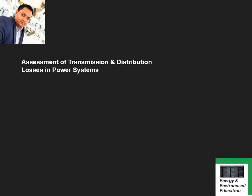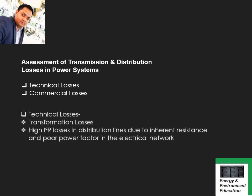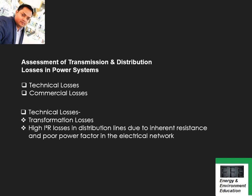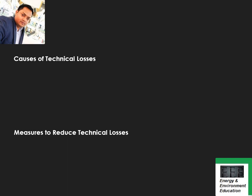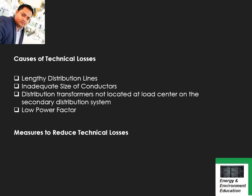As far as transmission losses in the power system are concerned, there are two types: technical losses and commercial losses. Technical losses include transformation losses and I²R losses. There are four causes of technical losses: first, lengthy distribution lines; second, inadequate size of conductor; third, distribution transformers not located at the load center on the secondary distribution system; and fourth, low power factor. You may be asked short questions or to explain briefly the different causes of technical losses.